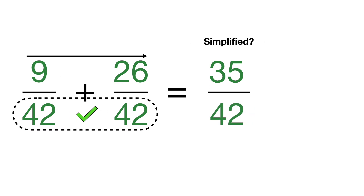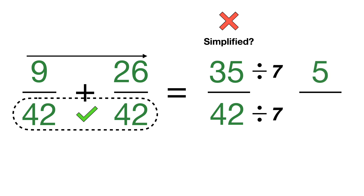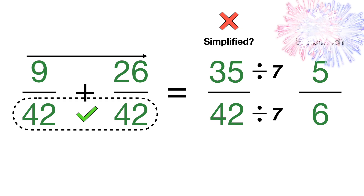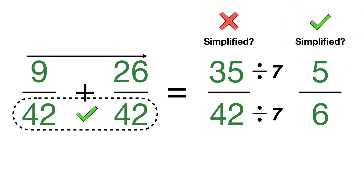Is 35/42 simplified? No it is not. 35 and 42 share a common multiple of 7, so we divide both by 7. 35 divided by 7 is 5 and 42 divided by 7 is 6. So 5/6 is the fully simplified version of this fraction.